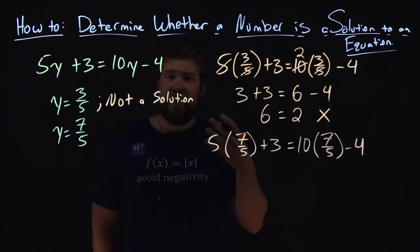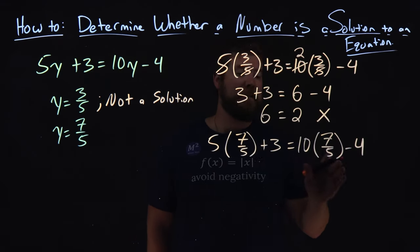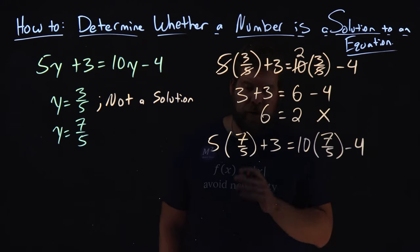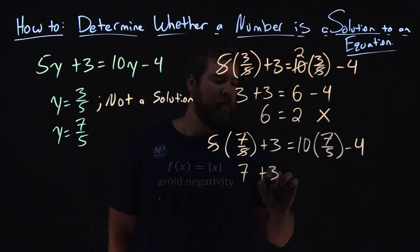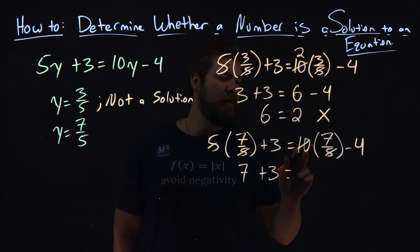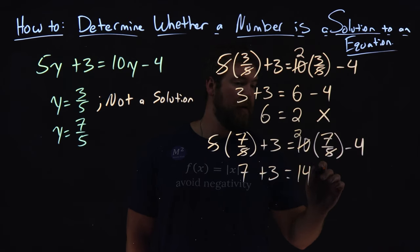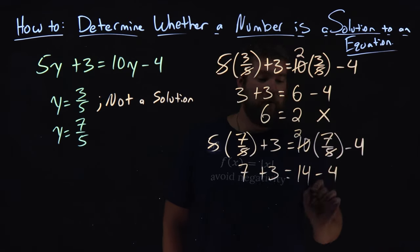Same process applies. Let's simplify the left and right-hand side of the equal sign. 5 and 5 again cancel here, we have 7 plus 3. 10 and 5, again, same thing, simplifies to be 2. 2 times 7 is 14, minus the 4 here.